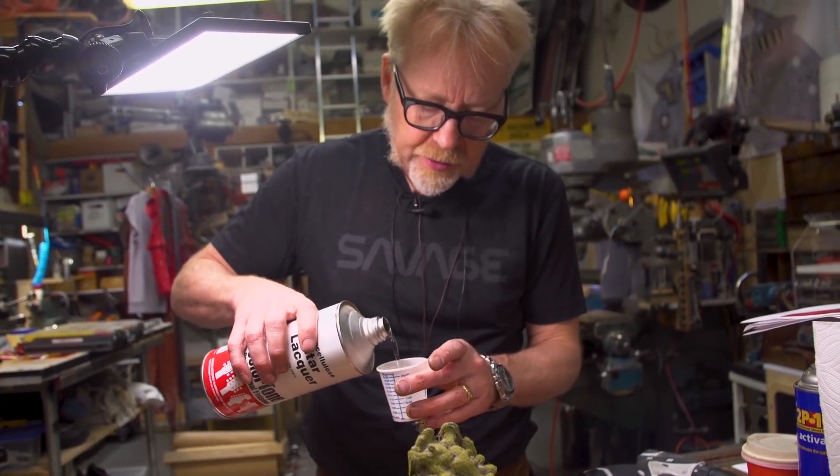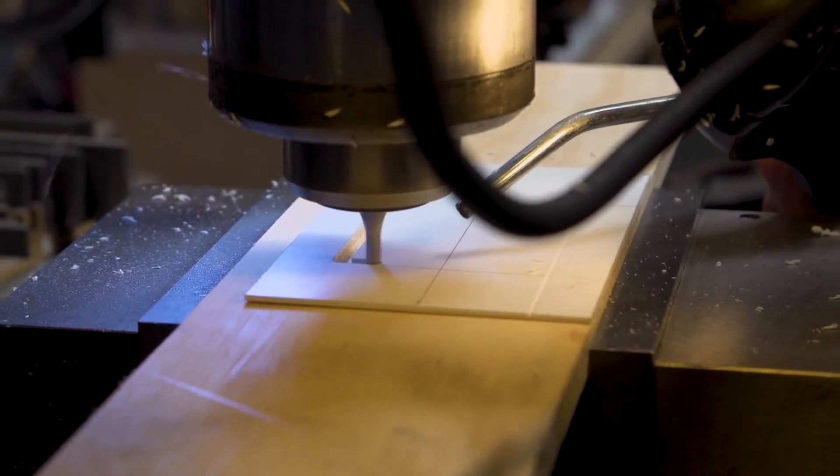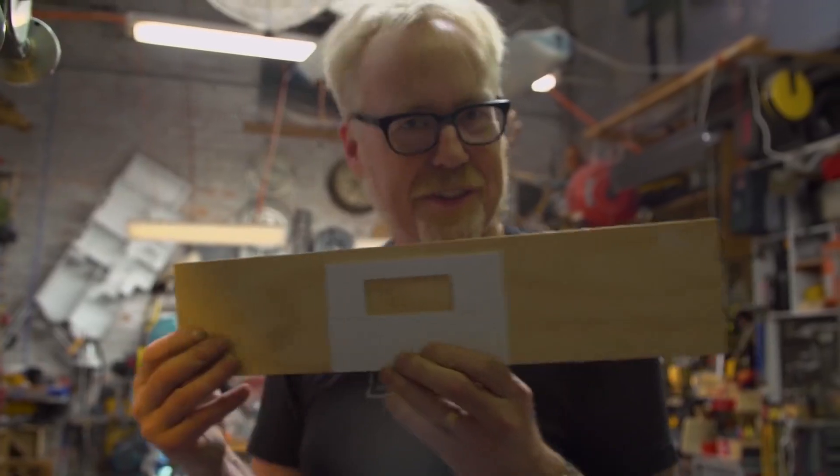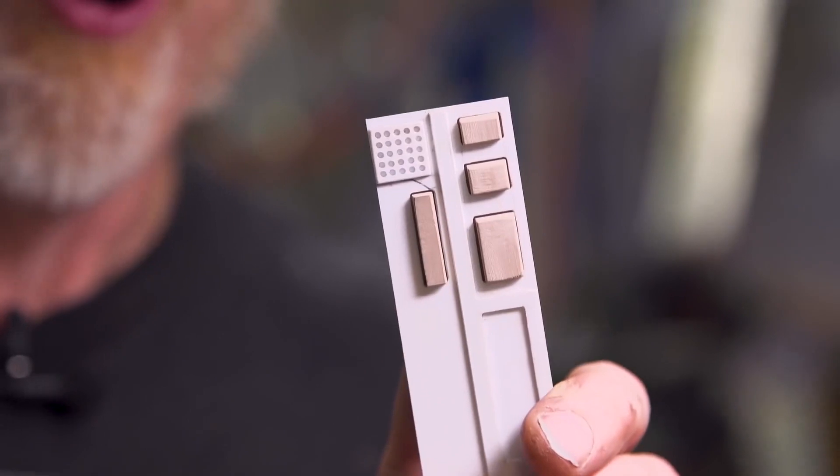He recommends guitar lacquer for a scratch-resistant topcoat, and he uses his Bridgeport mill to make perfectly rounded corners in styrene. Some would call that overkill, I say use the tools you have.